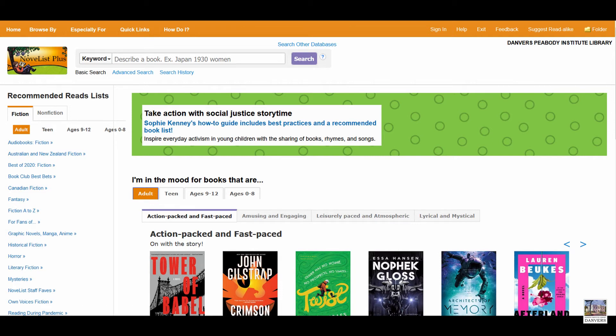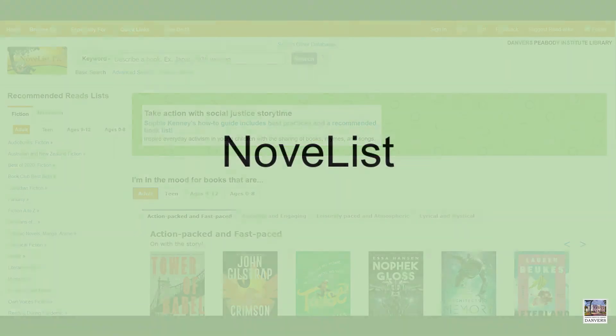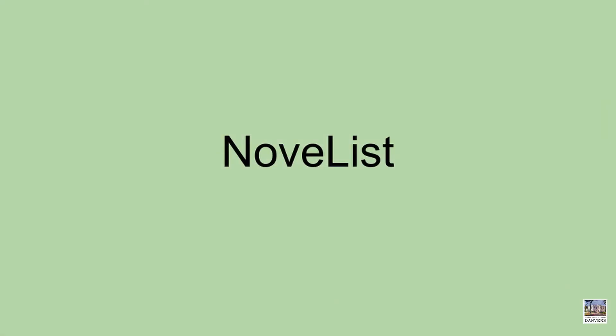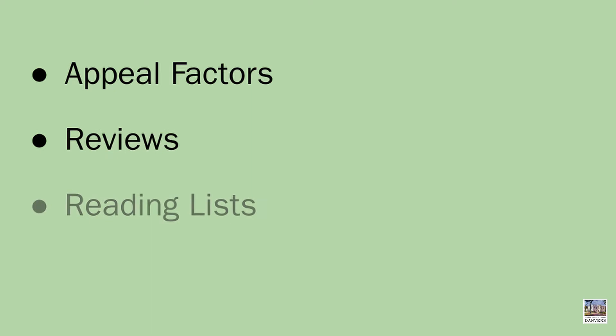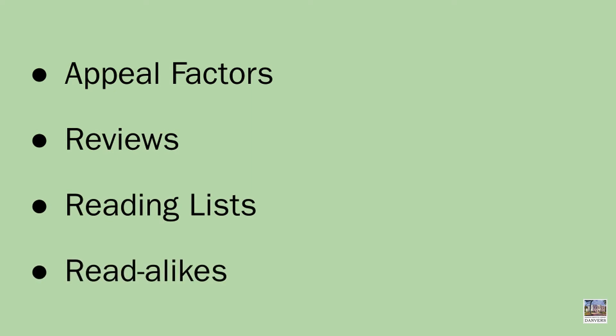Novelist is a database for finding fiction and nonfiction reading recommendations. It is a product by EBSCO. The database includes detailed profiles of books, including appeal factors, reviews, reading lists, read-alikes, and more.